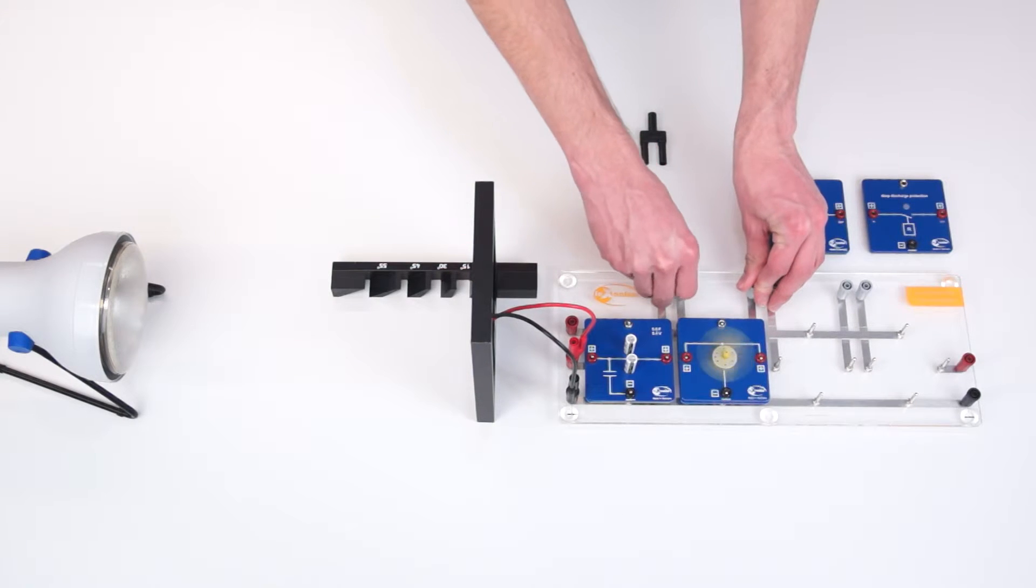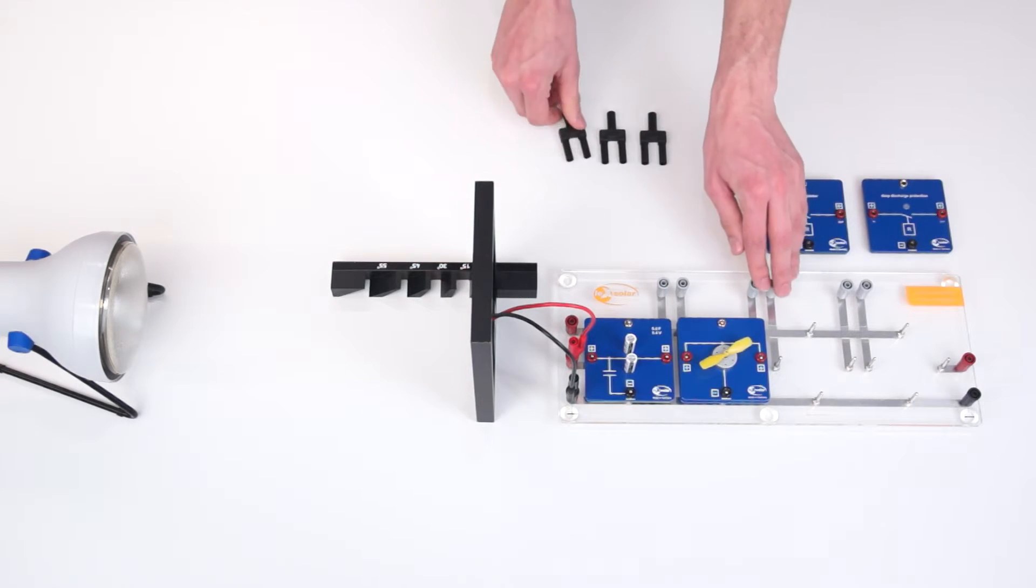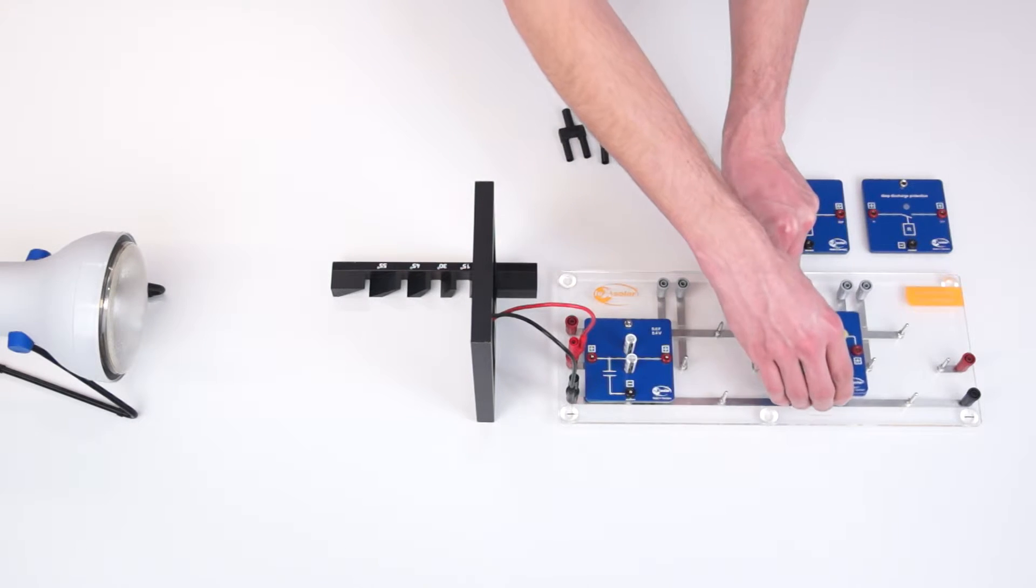The regulator is a so-called on-off controller, which disconnects the capacitor from the solar module when it reaches the preset charge voltage.